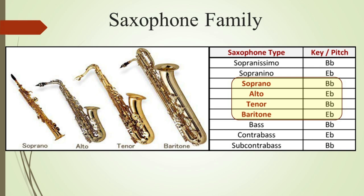Next saxophone is tenor. It is often used in rock and jazz music. The tenor sax is a large instrument with a large mouthpiece and it plays in the key of B flat. The fourth saxophone is baritone, which plays in the key of E flat and is the largest saxophone of them all. It produces a deep bass sound.